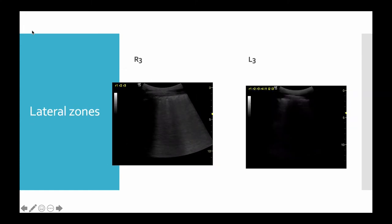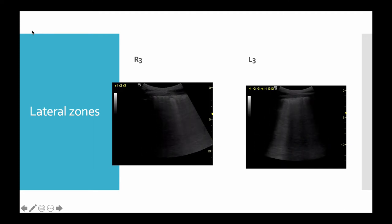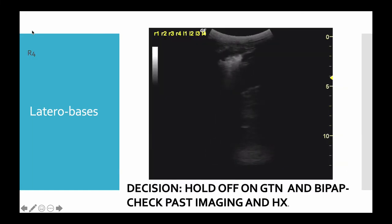Looking in the mid-zones we have a continuation of the B-lines. When you see the clips it starts to become concerning that the pleural line isn't straight — it's got these little tiny divots and pock marks in it. What's more, it is symmetrical and bilateral. The base is quite irregular — it's not usually this distinct. When we see this pattern, you really become worried about fibrosis rather than heart failure, and you hold off on the GTN and the BiPAP and start digging around on the past imaging and the history.